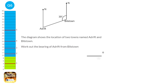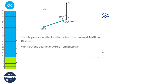The question asks us to find the bearing of Adrift from Bill's Town. We're at Bill's Town looking at the bearing of Adrift. To find that angle, we do 360 degrees — the full angle at a point — and take away the 39 degrees that we know, giving 321 degrees.